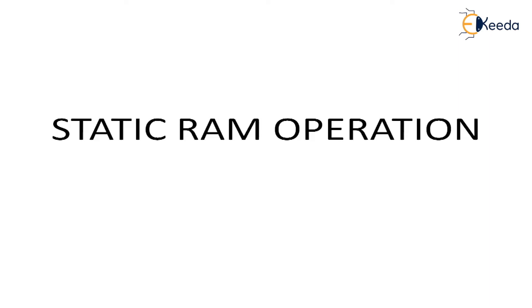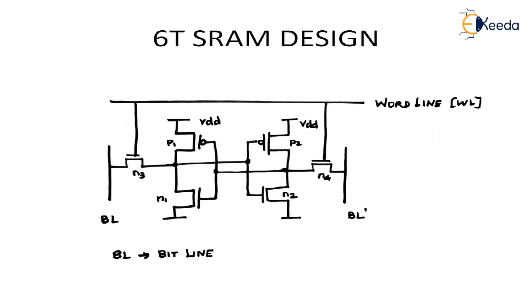A static RAM consists of 6 transistors — we normally call this the 6T design of SRAM. This is the most important 6T SRAM design. The 'T' stands for transistor, and the type of transistors we are using are MOSFETs. If you give 0 to a PMOS, the device will turn on, and if you give 1 to an NMOS, the NMOS will turn on.